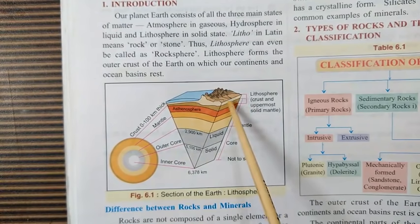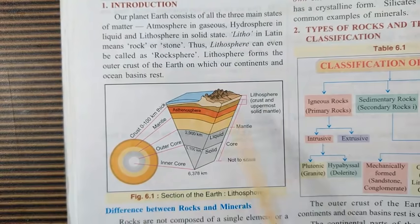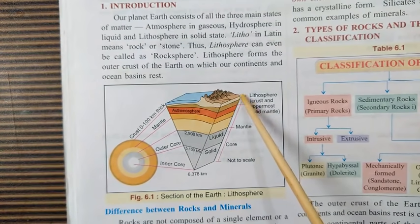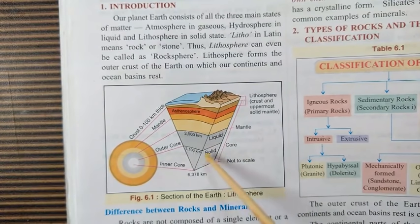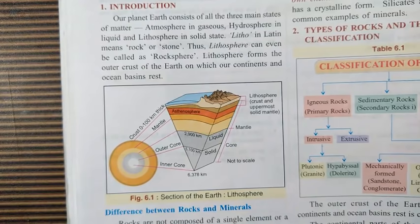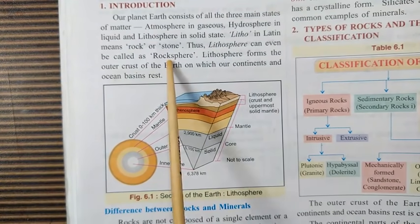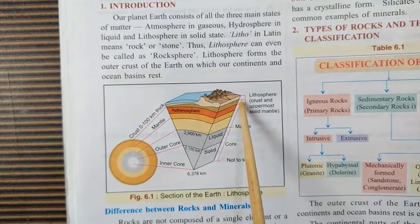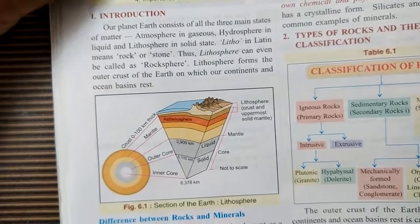The crust has two layers: the upper crust and the lower crust. The thickness of the upper crust is only 30 kilometers. When we talk about the lithosphere — litho meaning rock — we are dealing only with the upper layer of the earth's crust. We are not dealing with the mantle or core in this chapter; we are dealing only with the upper layer of the earth's crust called the lithosphere.